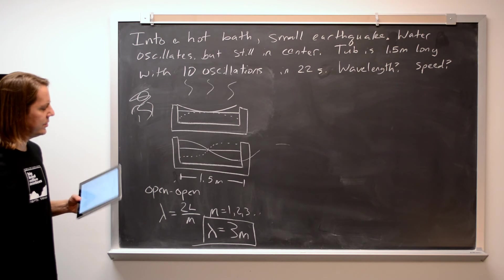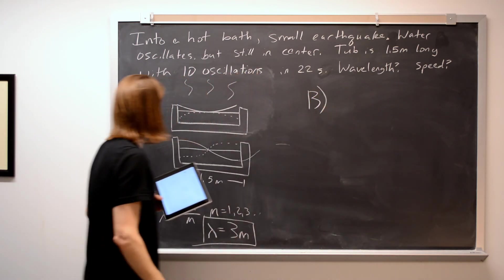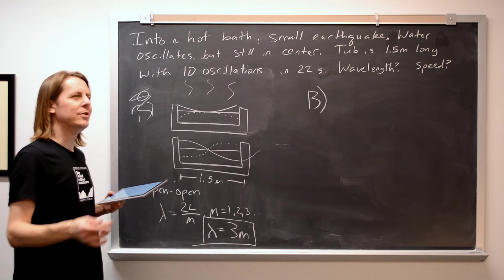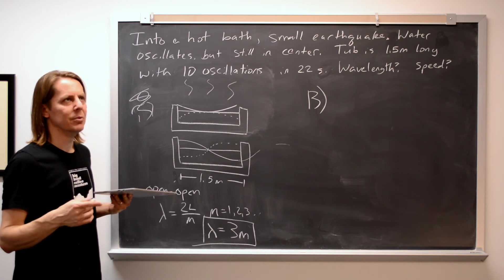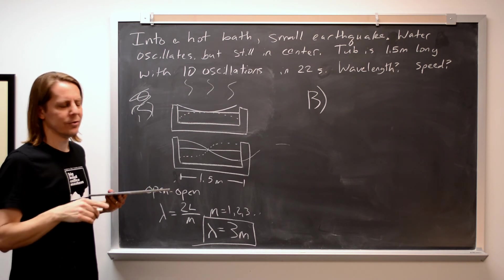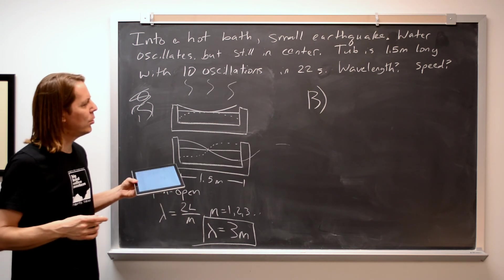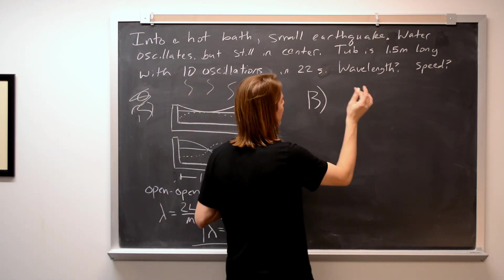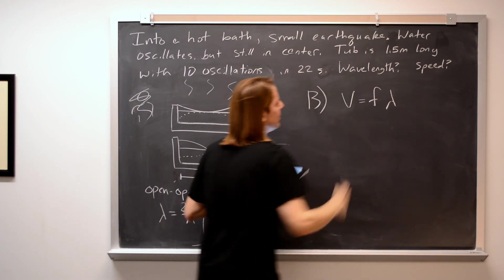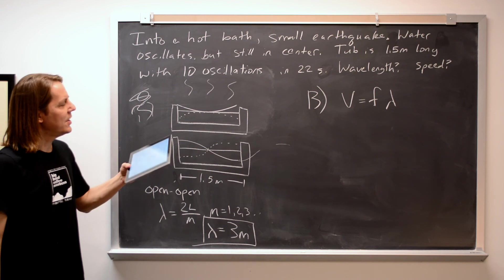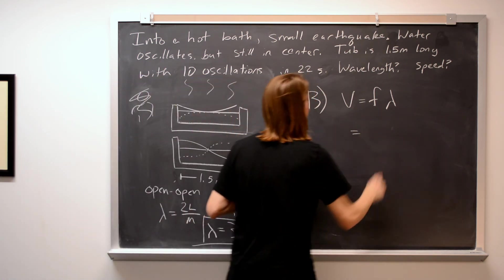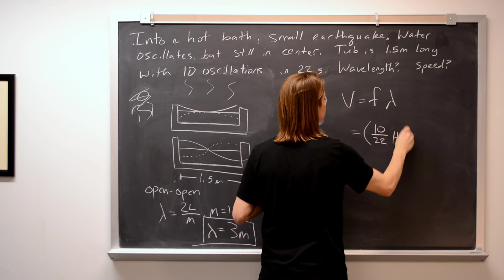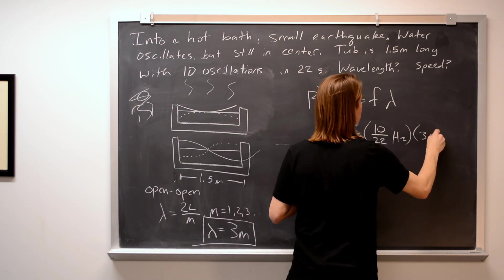The second question: what is the speed? For wave speed, there are two equations to consider. One is related to the physical properties of the system — for a clamped string, wave speed is the square root of tension over mass density. For a surface wave on water, that equation is complicated, so we use the other definition: wave speed equals frequency times wavelength. We know the frequency from our measurement — 10 oscillations every 22 seconds, so 10/22 hertz.